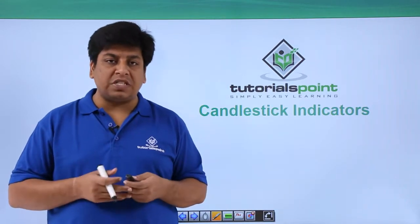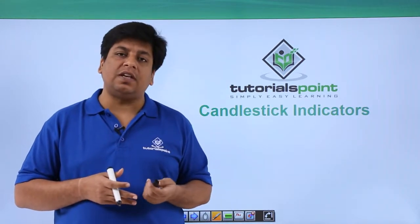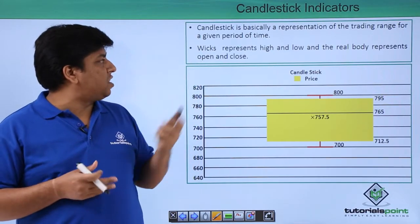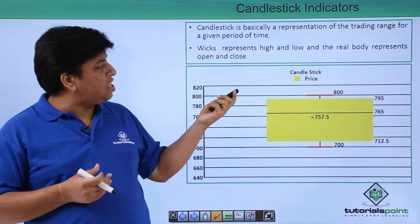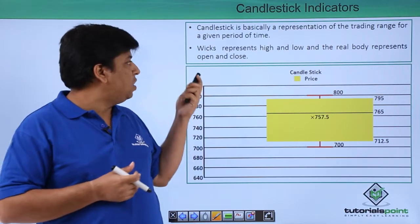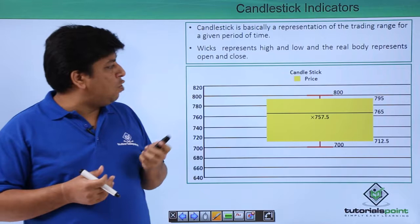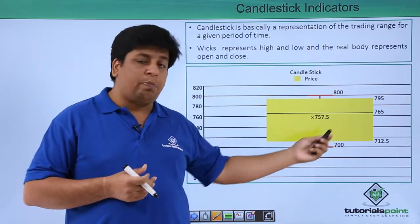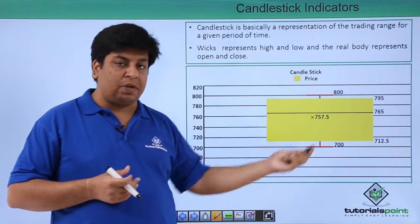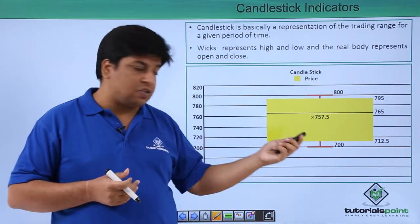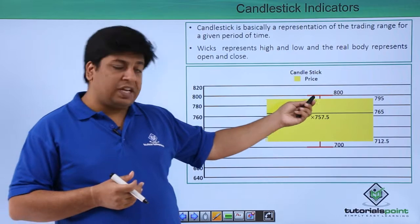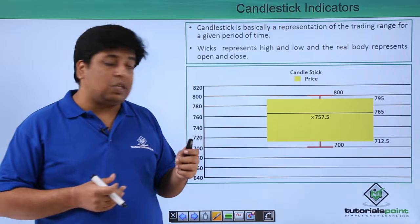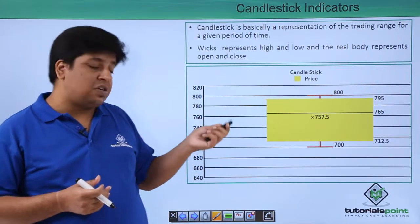Candlestick indicator is an important aspect of technical analysis. It is basically a representation of the trading range for a given period of time. It represents the high and low, and the real body represents open and close. This box plot I've created will be forming our candlestick indicator — showing the highest range and the lowest range that a particular stock has traded in a day.